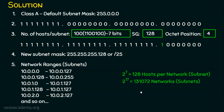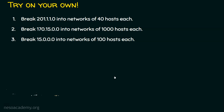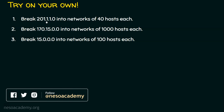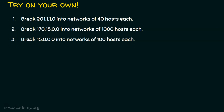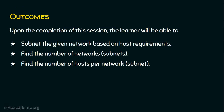We have solved this problem. Here are three homework problems: first, break 201.1.1.0 into networks of 40 hosts each; second, break 172.15.0.0 into networks of 1000 hosts each; third, subnet 15.0.0.0 into networks of 100 hosts each. Please solve using the same five-step approach and post your answers in the comments. We now know how to subnet based on host requirements and find the number of networks and hosts per subnet.